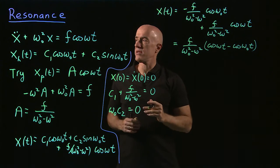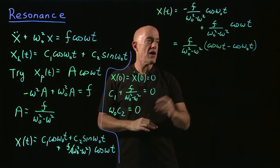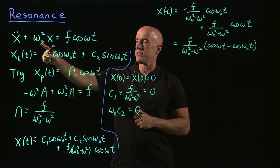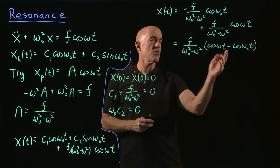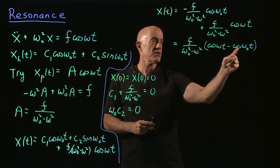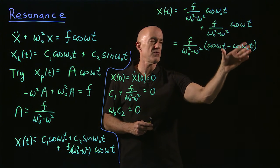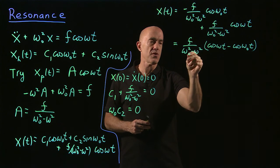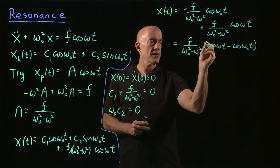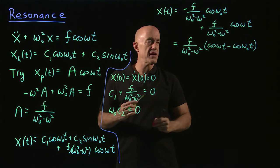That's the solution to the differential equation when omega is different from omega naught. We're interested in resonance when the singing voice matches the natural frequency of the oscillator — when omega approaches omega naught. As omega goes to omega naught, the numerator cosine omega t minus cosine omega naught t goes to 0, and the denominator omega naught squared minus omega squared also goes to 0. So this is a 0 over 0 situation that we need to handle.